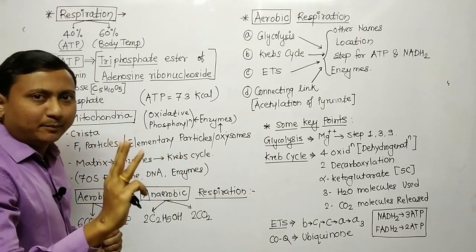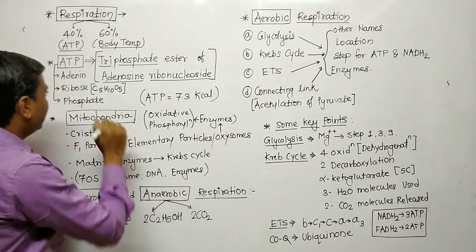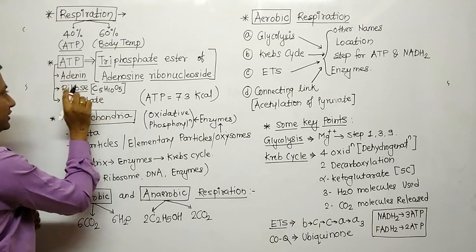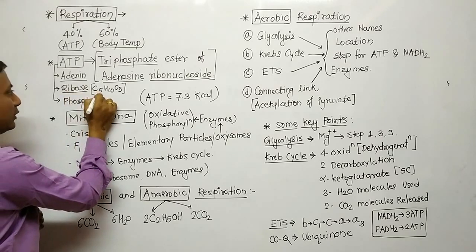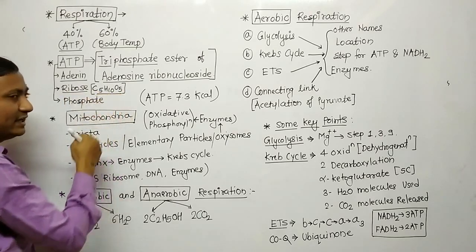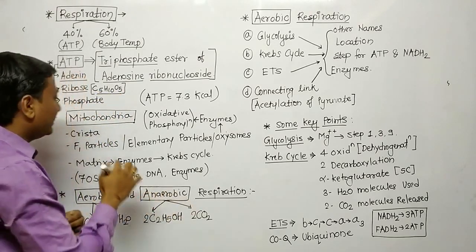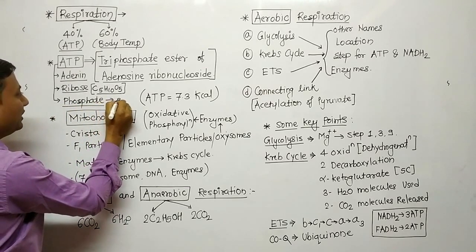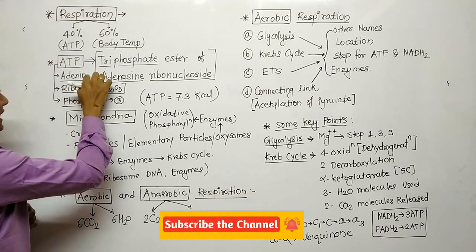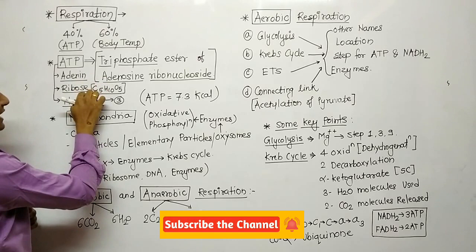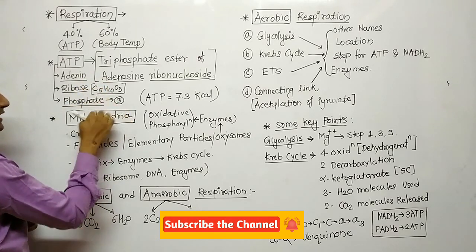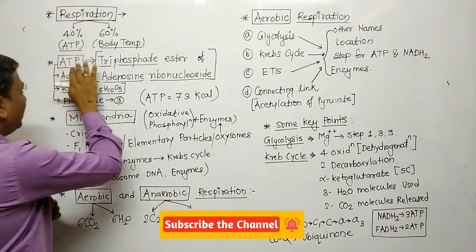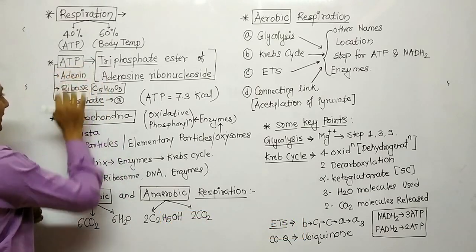In ATP there are 3 components. First, a nitrogenous base that is adenine. Second is the sugar, that is ribose sugar, with formula C5H10O5. Third component is phosphate. In ATP there are total 3 phosphate groups. So adenine plus ribose is called adenosine, plus 3 phosphate groups — that's why it is called adenosine triphosphate.